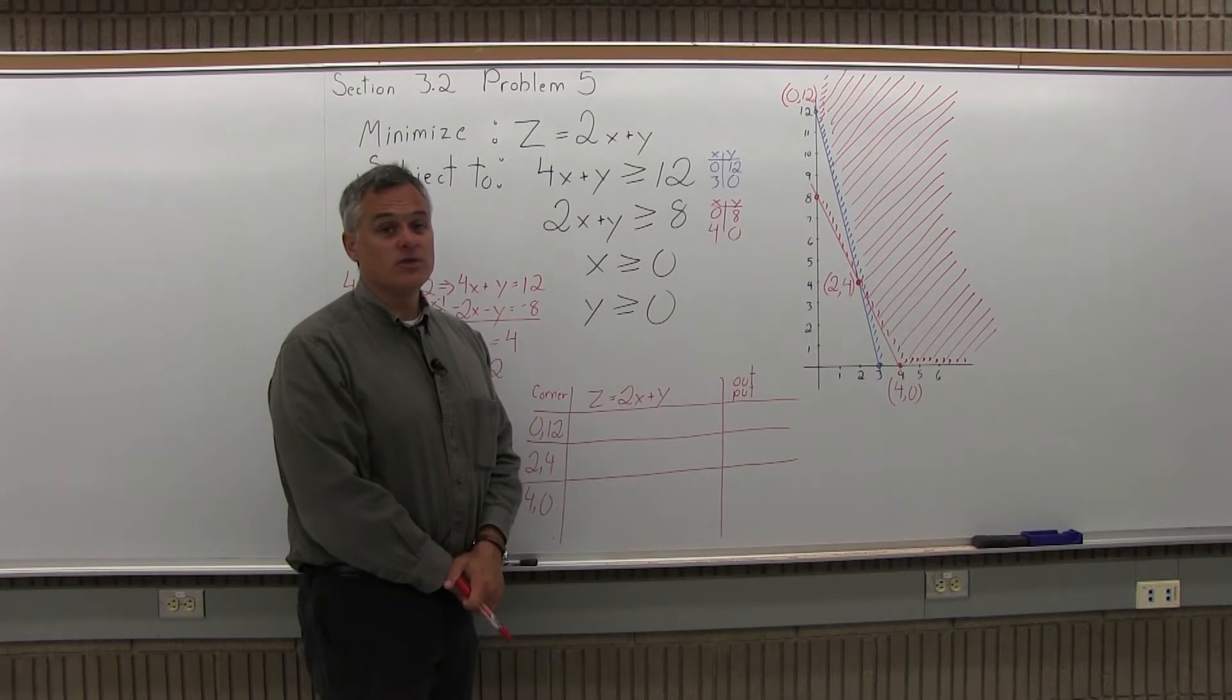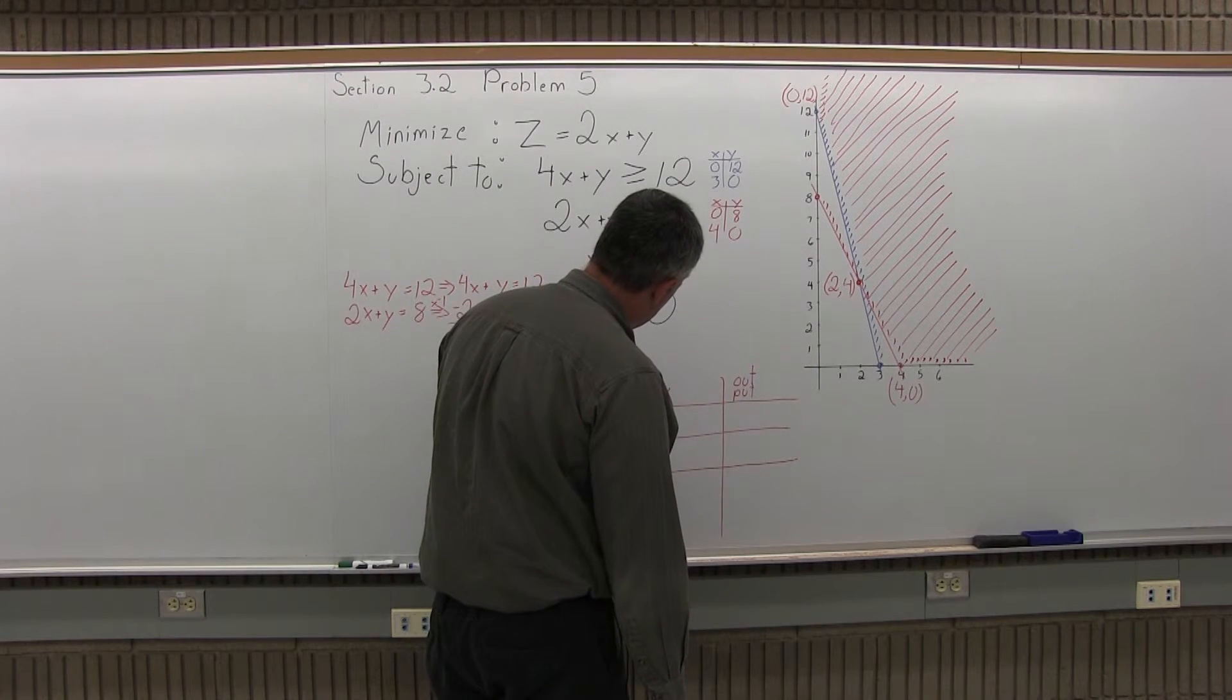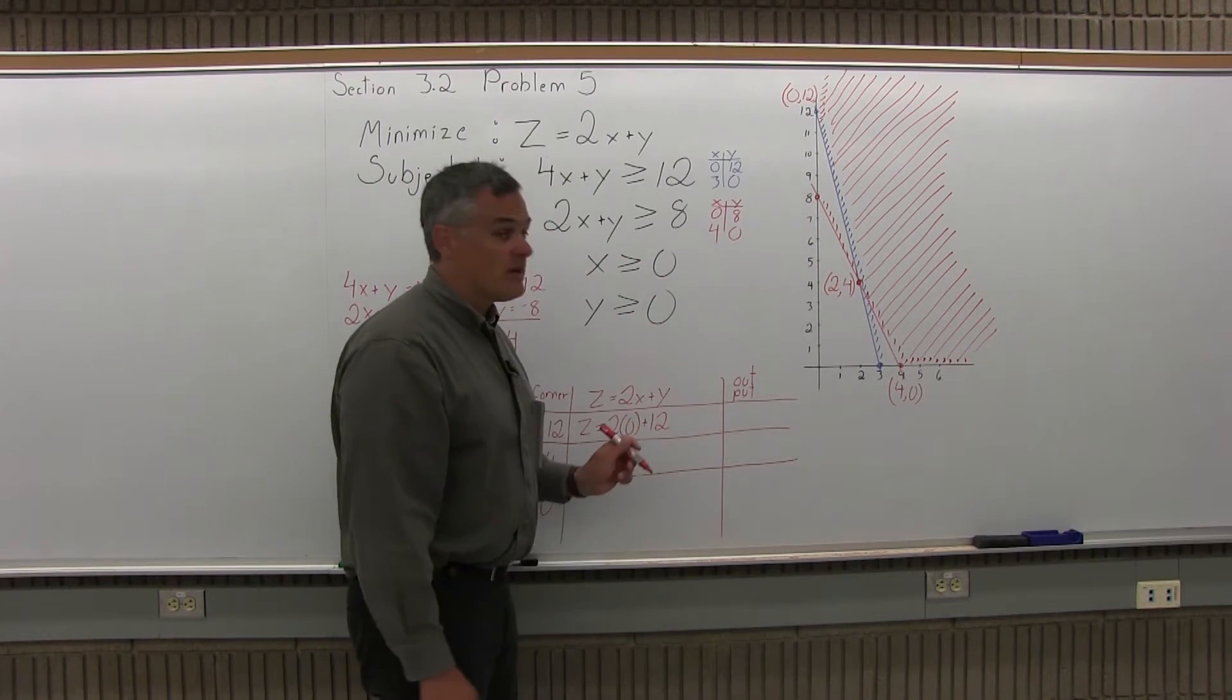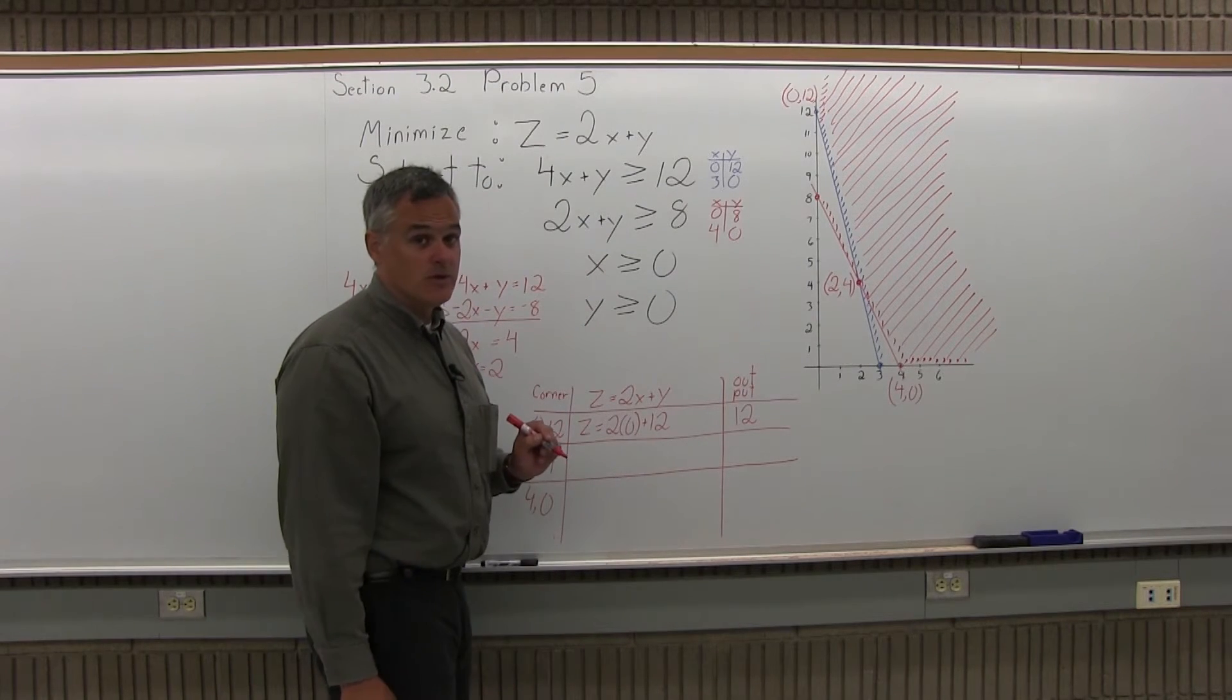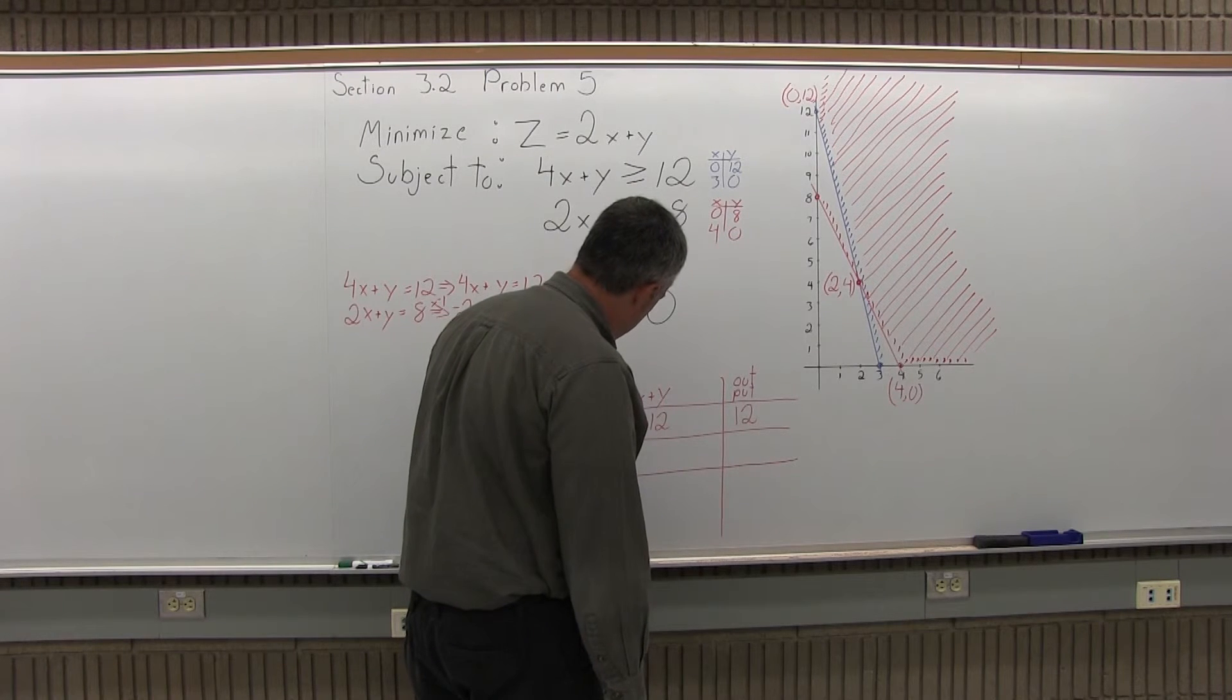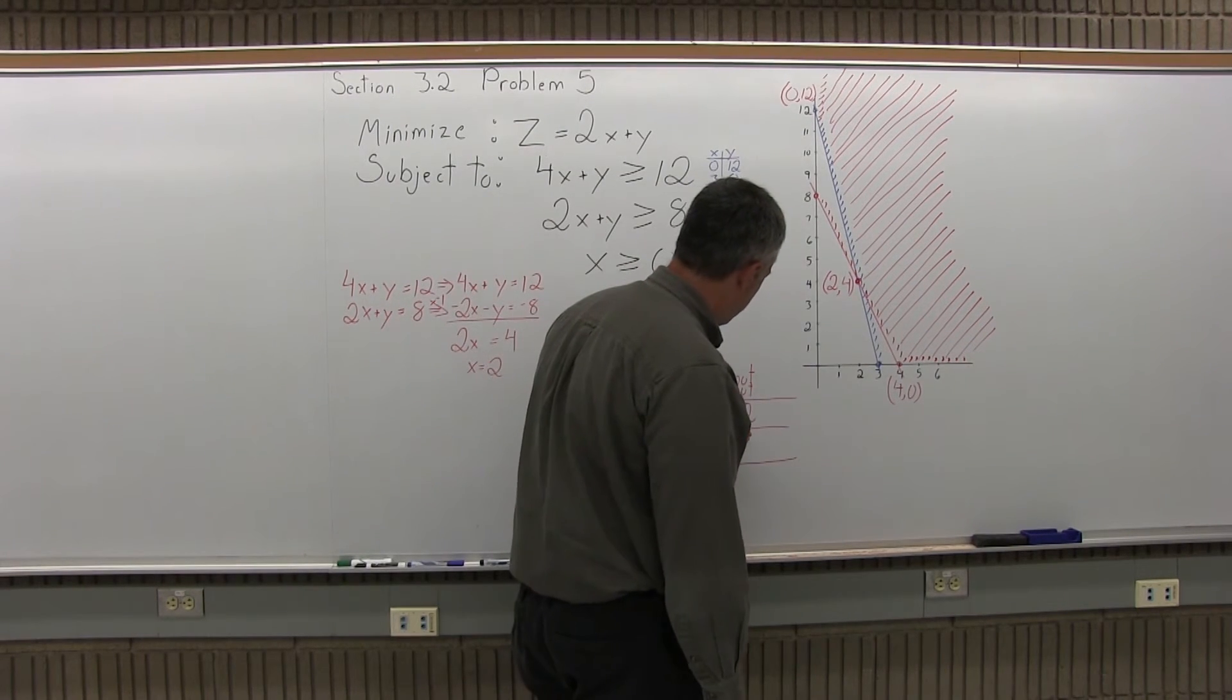So try the x and y values of each corner point in the object function. The first one being 0, 12 would give me a result of z equals 2 times 0 plus 12. 2 times 0 is 0. You add 0 plus 12 and you get an output of 12 at that corner point. The next corner point is 2, 4. So x is 2 and y is 4. So when I put that in the object function, the result would be 2 times 2 plus 4. So 2 times 2 is 4. Plus another 4 after that. 4 plus 4 gives me an output of 8.